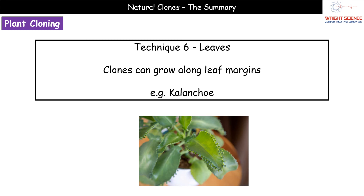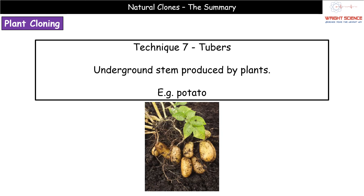The sixth technique involves leaf clones. A really interesting plant that many biology labs have is Kalanchoe. Around the margins of its leaves, you can see tiny new plants sticking out the sides — each one a clone of the parent plant. So clones growing on leaf margins is another way plants can naturally produce genetically identical offspring.